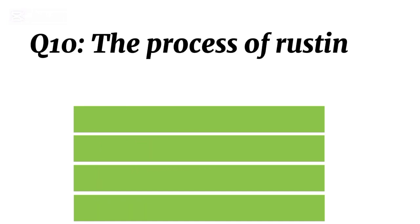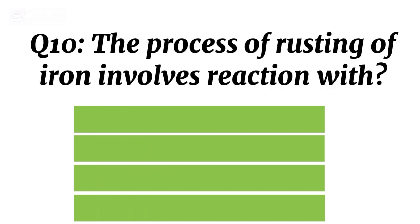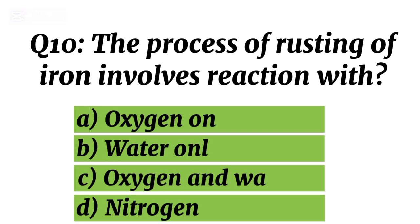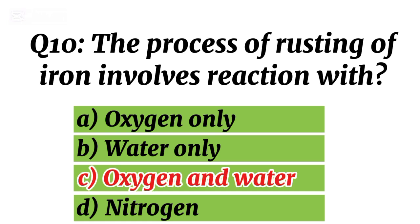Question 10. The process of rusting of iron involves reaction with? Correct option B. Oxygen and water.